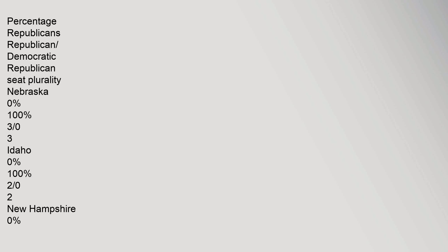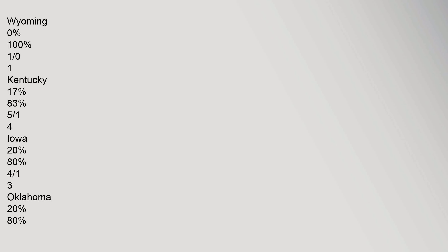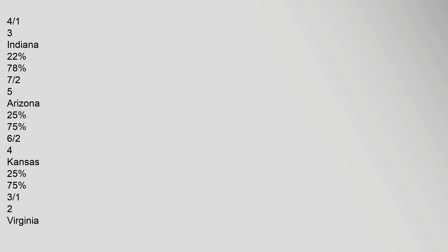Partisan mix of the House by State — percentage Republican vs. Democratic and seat plurality: Nebraska 0% Democratic, 100% Republican, 3 over 0. Idaho 0% Democratic, 100% Republican, 2 over 0. New Hampshire 0% Democratic, 100% Republican, 2 over 0. Delaware 0% Democratic, 100% Republican, 1 over 0. Montana 0% Democratic, 100% Republican, 1 over 0. Wyoming 0% Democratic, 100% Republican, 1 over 0. Kentucky 17% Democratic, 83% Republican, 5 over 1. Iowa 20% Democratic, 80% Republican, 4 over 1. Oklahoma 20% Democratic, 80% Republican, 4 over 0. Indiana 22% Democratic, 78% Republican. Arizona 25% Democratic, 75% Republican. Kansas 25% Democratic, 75% Republican. Virginia 27% Democratic, 73% Republican. Florida 28% Democratic, 72% Republican. Alabama 29% Democratic, 71% Republican. Louisiana 29% Democratic, 71% Republican.